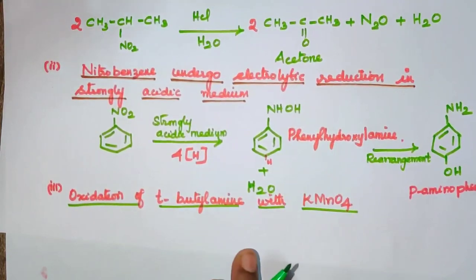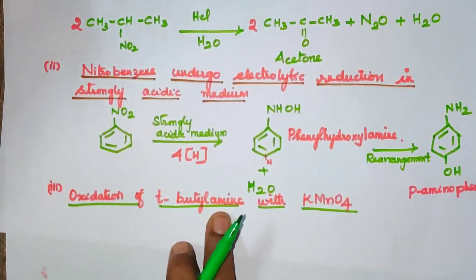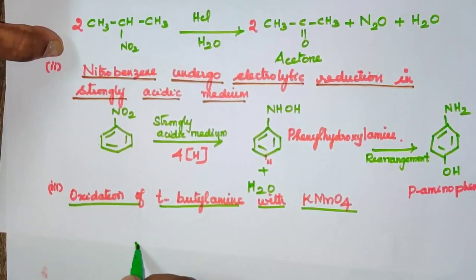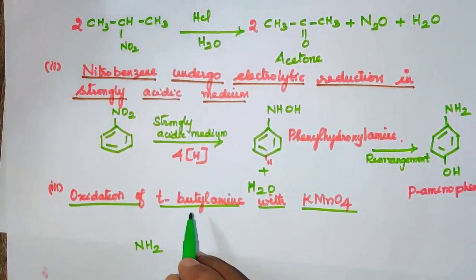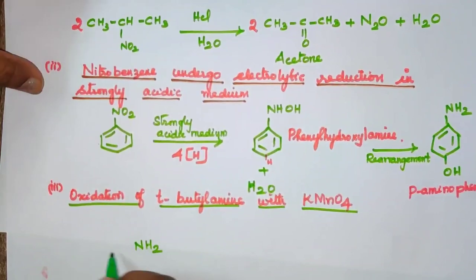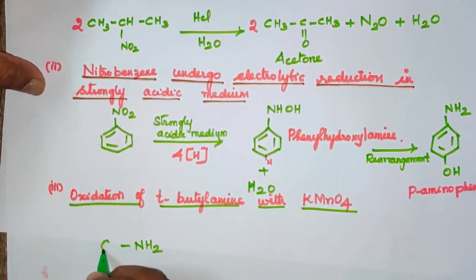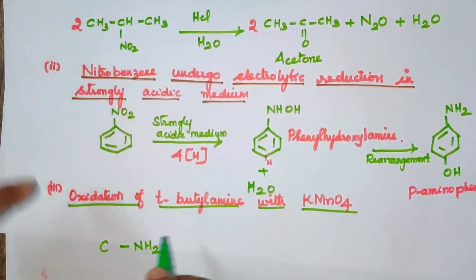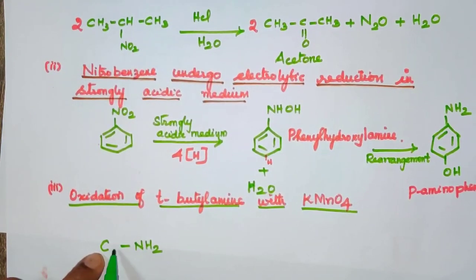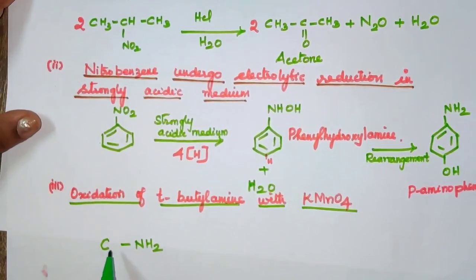The reactant is tertiary butylamine. The amine functional group is NH2. This is also an alkyl group — tertiary butyl. The connected carbon is tertiary, meaning there is no hydrogen on the carbon bearing the NH2 group — because it is tertiary.